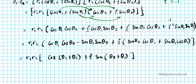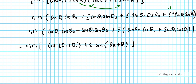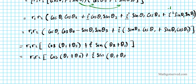Plugging that out, we have r₁r₂ times (cosine(θ₁ + θ₂) plus i sine(θ₁ + θ₂)). Since addition commutes, the order of θ₁ and θ₂ doesn't matter, and there you have your product formula for complex numbers.